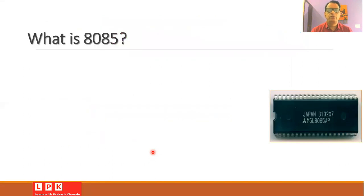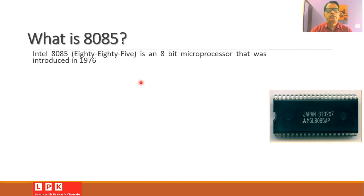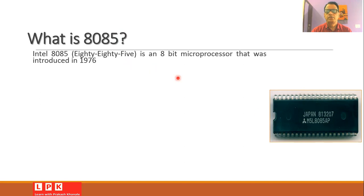Let us start the session with the question: what is 8085? Intel 8085 is an 8-bit microprocessor, introduced in 1976. This is a photo of a typical 8085 microprocessor, where one can easily observe that it is in IC form. This IC has 20 pins on one side and 20 pins on the other side, so it is a 40-pin IC.